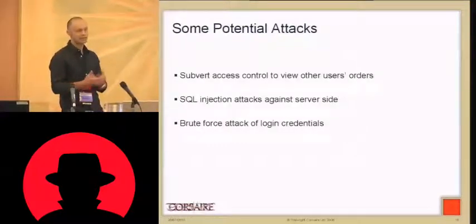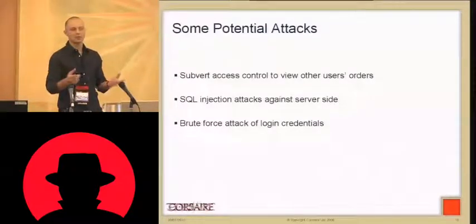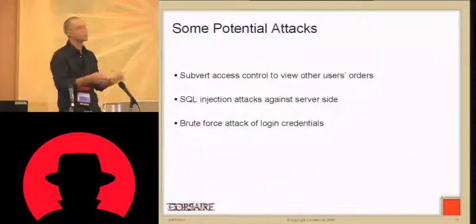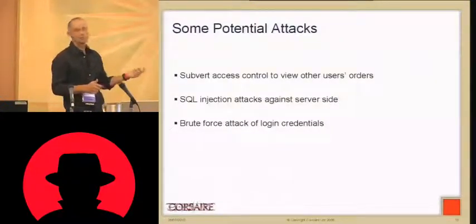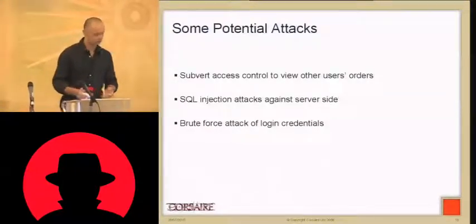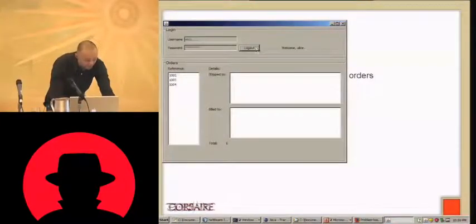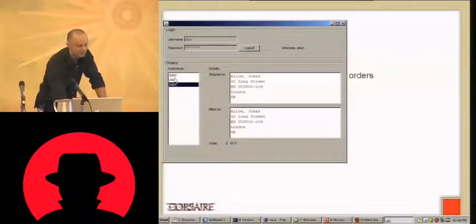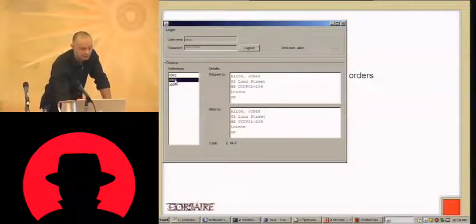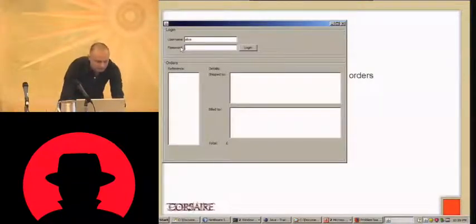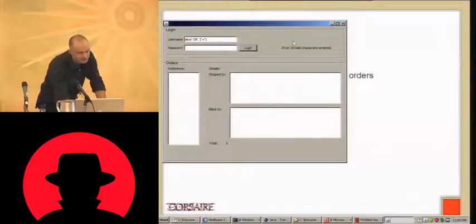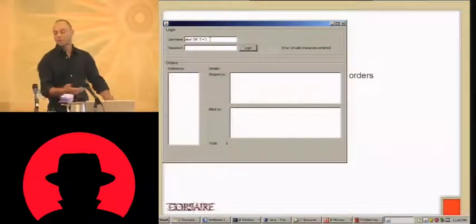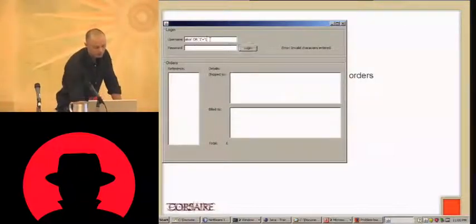Just from that simple functionality, we already have a number of attack scenarios. Can Bob see Alice's orders? Those are just order numbers, so can we manipulate the application so one user can see another user's orders? Can we perform SQL injection attacks using any of those fields? Can we do an automated attack like brute force of login credentials? To do the access control test, the GUI only lets us click on order numbers — it gets in the way. Similarly, trying simple SQL injection on the login form, there's some validation going on — we don't know if it's client-side or server-side — but it's not letting us enter the characters needed.